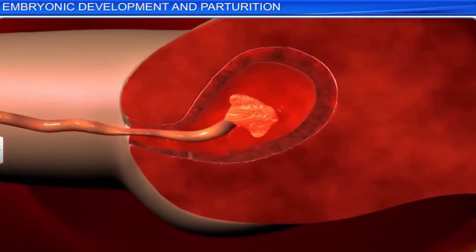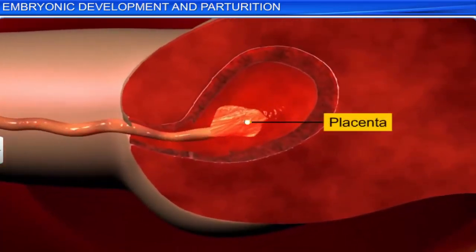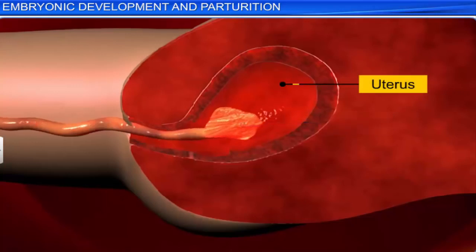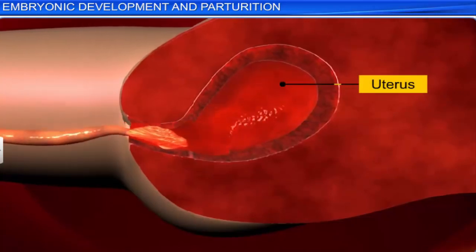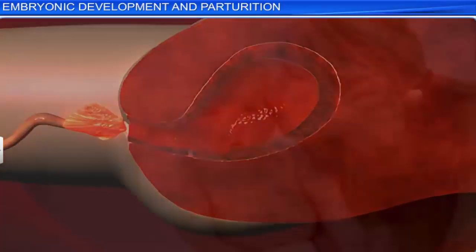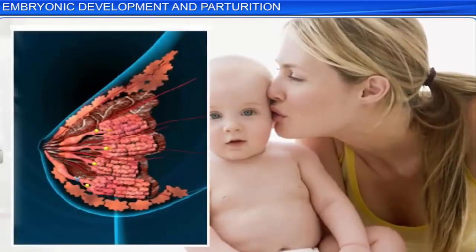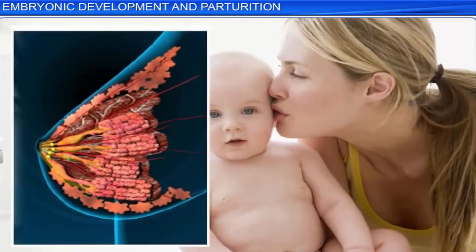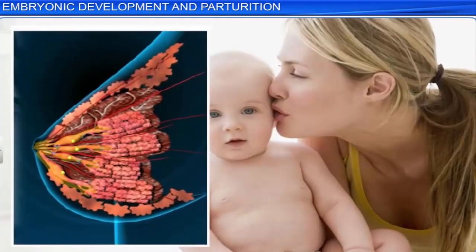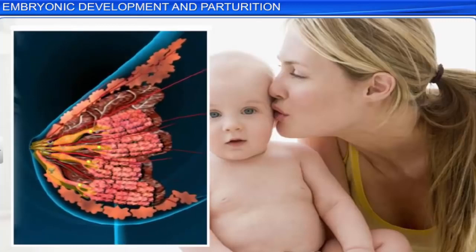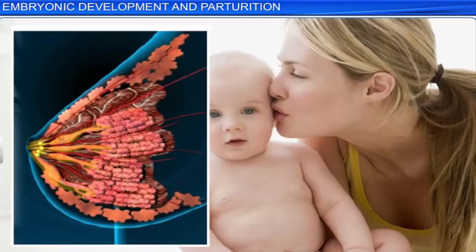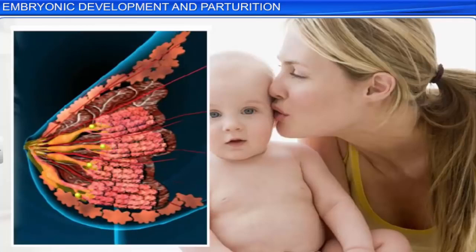Immediately after the birth of the baby, the placenta is expelled from the uterus. Soon after birth, the baby needs to be breastfed by the mother as early as possible, because immediately after parturition, the mammary glands start secreting colostrum — a form of milk that is rich in antibodies and improves the immune system of the baby.